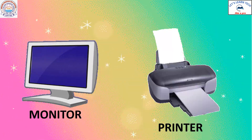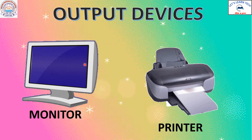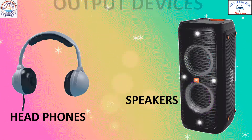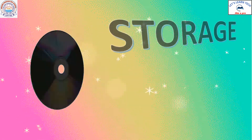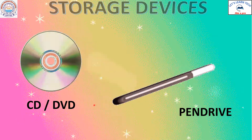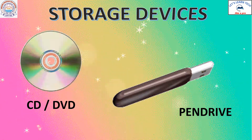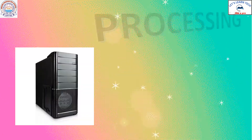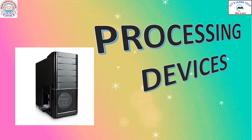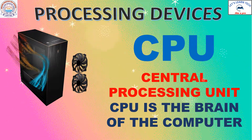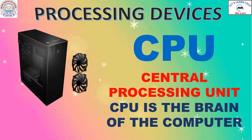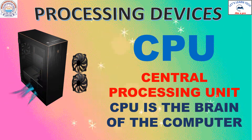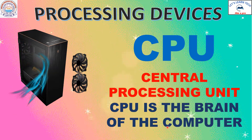Now output devices: monitor, printer, headphones and speakers. Storage devices: CD or DVD and a pen drive. Processing devices: CPU. CPU is Central Processing Unit. This processes all the input of the computer and decides the output. CPU is like the brain of the computer.